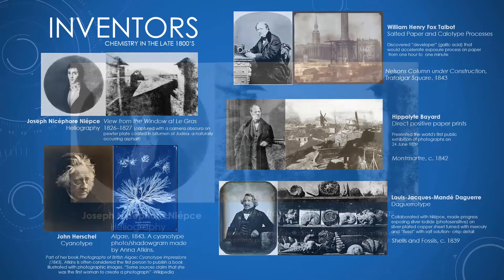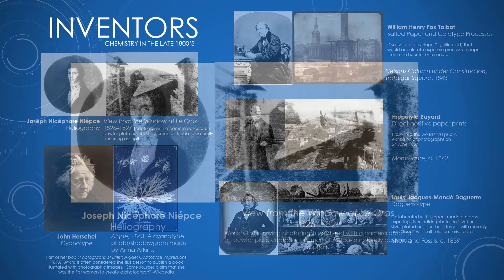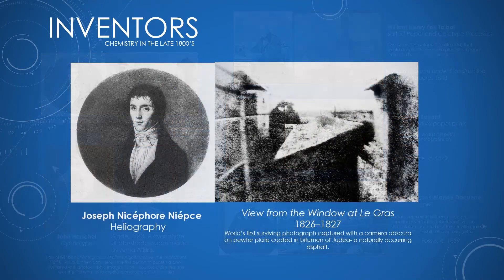Among the earliest inventors is Joseph Niépce, credited for heliography. The image he's known for is called View from the Window at Le Gras, captured using a camera obscura. He figured out that if you coated a metal plate with bitumen of Judea — a naturally occurring asphalt — light would harden it in certain places, and then you could wash away the remainder and get an image. He successfully captured the very first photographic image.